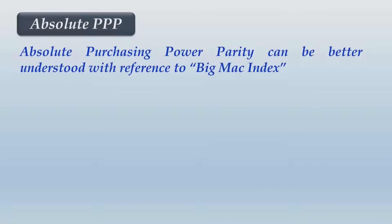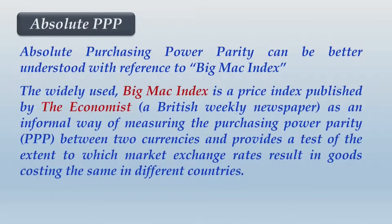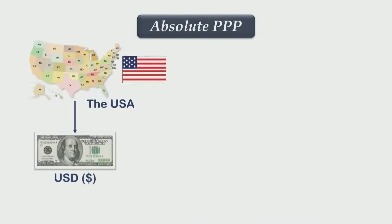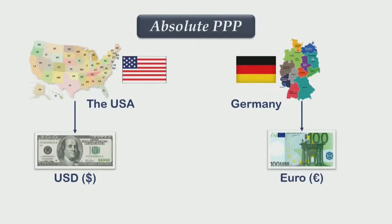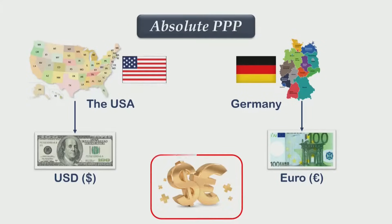Let us try to understand absolute purchasing power parity in more detail. The USA uses the US dollar as its home currency, whereas Germany uses the Euro. We are trying to establish the interrelationship between a unit of US dollar and Euro through purchasing power parity.